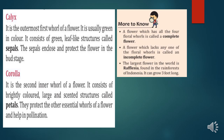The first one is Calyx. It is the outermost whorl of a flower. It is green in color and consists of leaf-like structures called sepals. You can see in the figure — the green colored part is called the Calyx, also called sepal. Sepal and Calyx are the same.